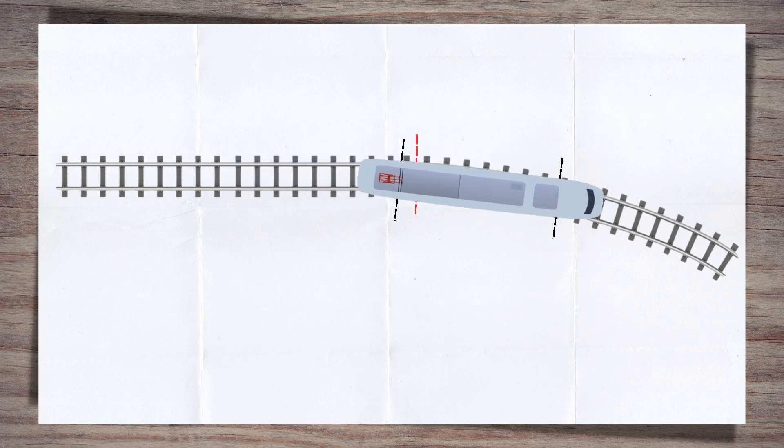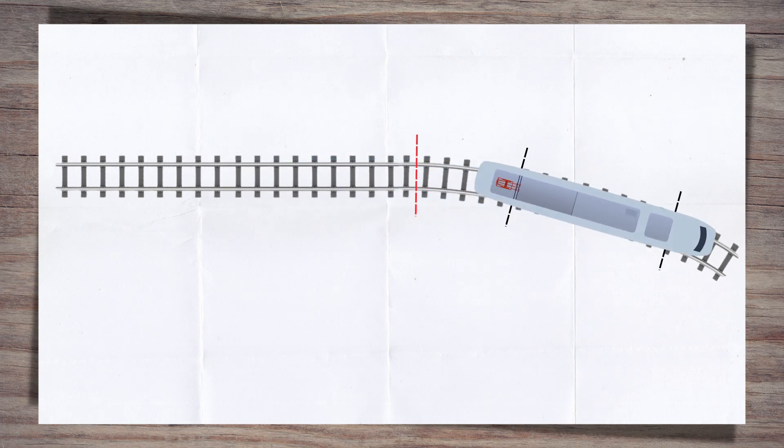This continues until the second bogey crosses the VT, when the forces on the train will be the same. So we can say that the change in radius happened within the distance between the two wheelsets, 12.2 metres.